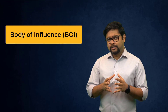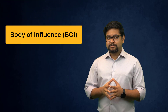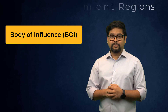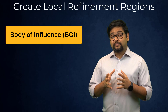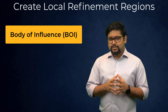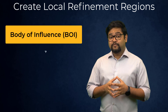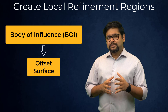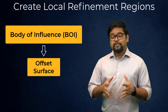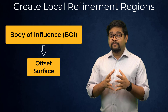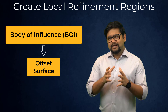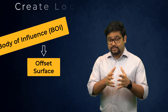The Watertight Meshing Workflow lets the user create Body of Influence or BOI Type Refinement Regions using the Create Local Refinement Regions task. One of the ways of creating a refinement region through this task is by using the Offset Surface type. Using this type, one can define multiple levels of BOIs that resemble the shape of the selected object. Let's now see how we can set up this task.